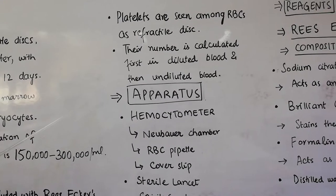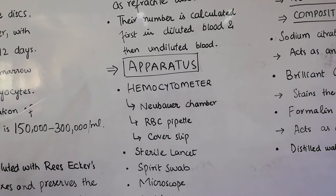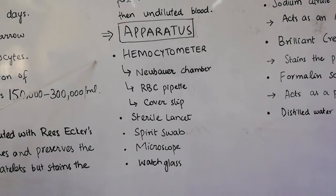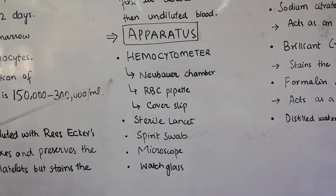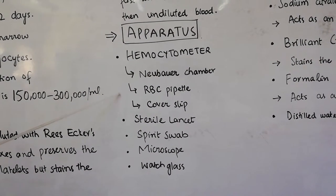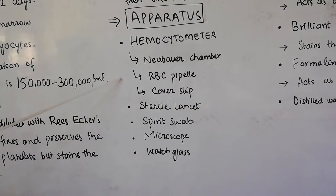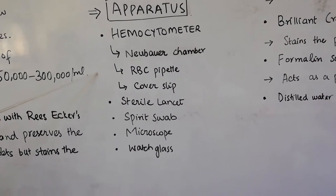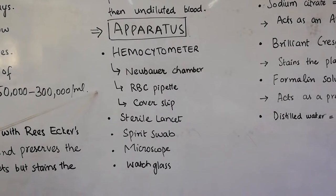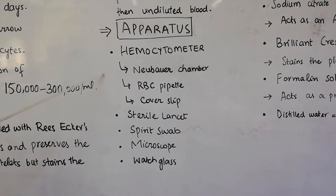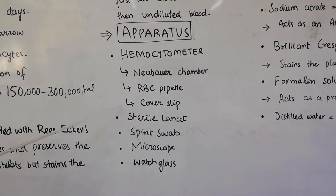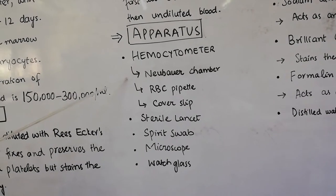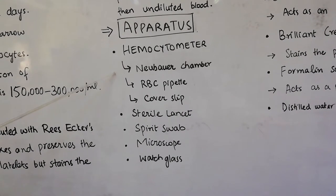The apparatus required in this practical is the Hemocytometer which consists of three parts. First is the Neubauer chamber. The second is the RBC pipette, which is used both for the determination of RBC count and for the determination of platelet count by the Neubauer chamber. And the third thing is the cover slip which is placed over the central platform of the Neubauer chamber.